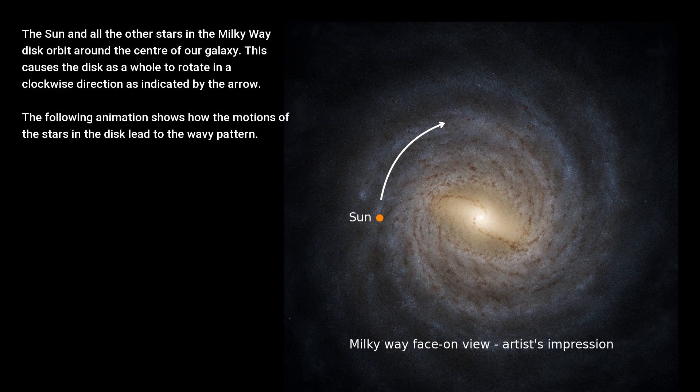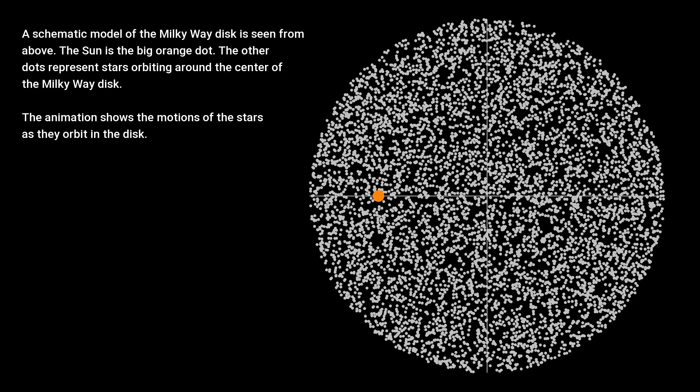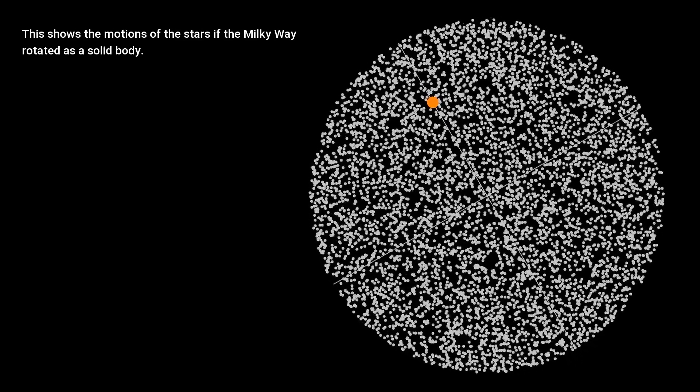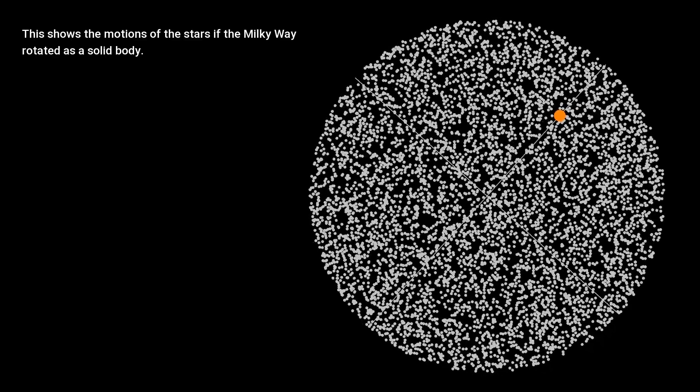The following animation shows how the motions of the stars in the disk lead to the wavy pattern. A schematic model of the Milky Way disk is seen from above. The Sun is the big orange dot. The other dots represent stars orbiting around the center of the Milky Way disk. The animation shows the motions of the stars as they orbit in the disk.